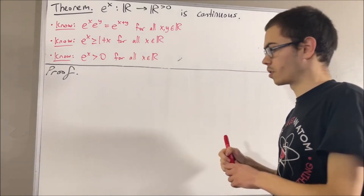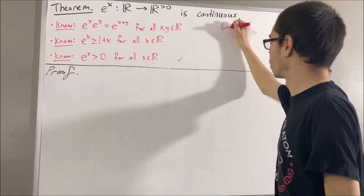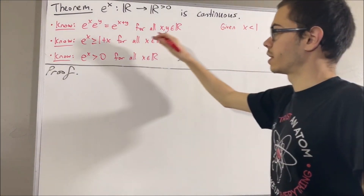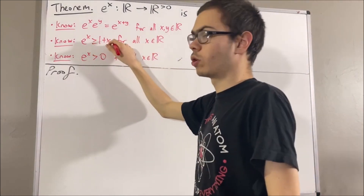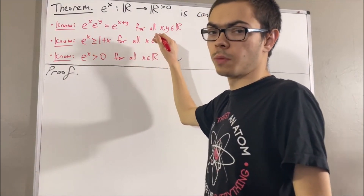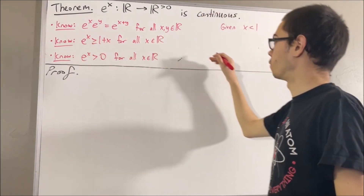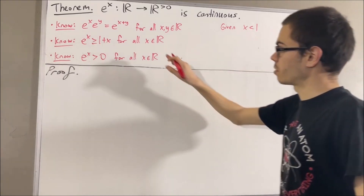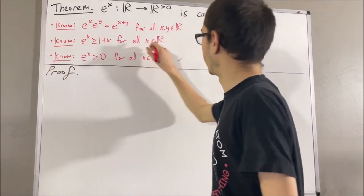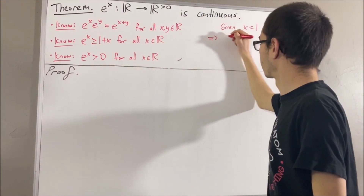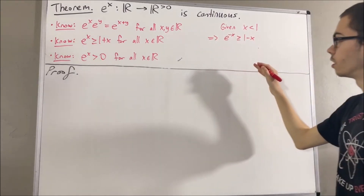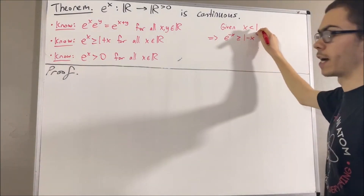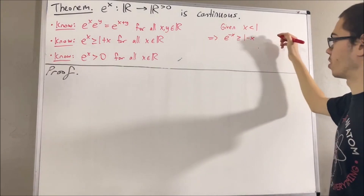Now, if we consider any real number x less than 1, well, we know that this inequality works for every real number. So, in particular, it must work for the negative of x. So, substituting in negative x, we have this. And since x is less than 1, we have 1 minus x is greater than 0.